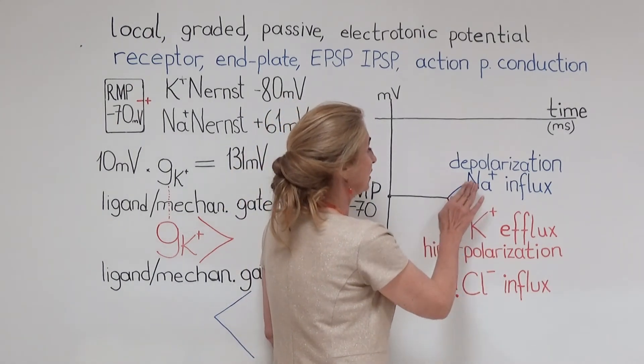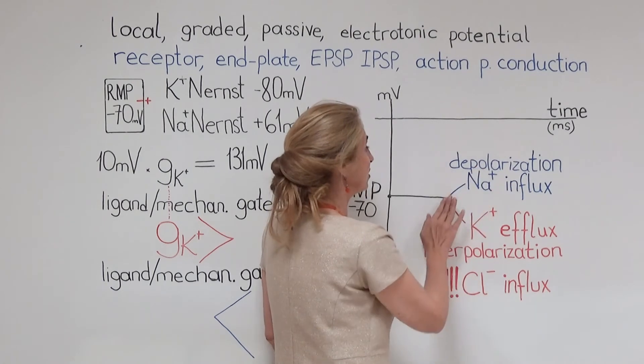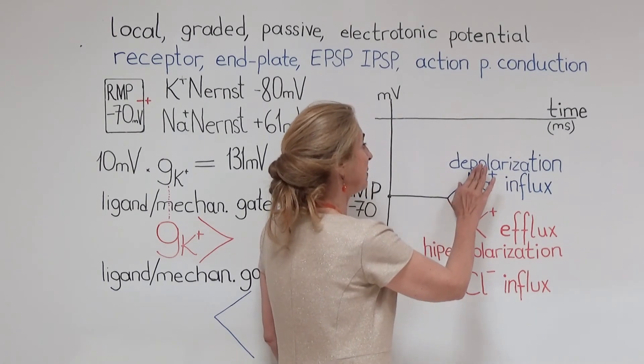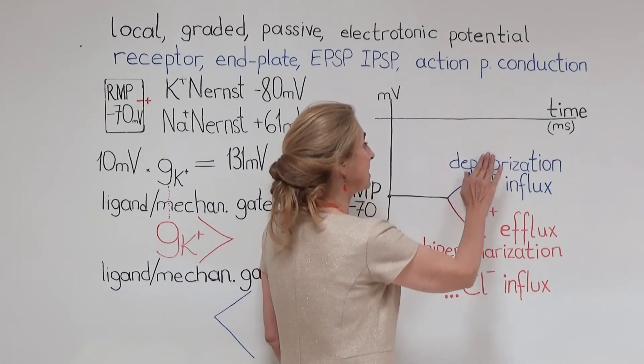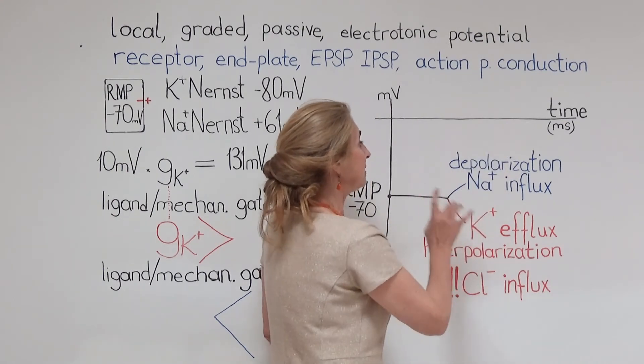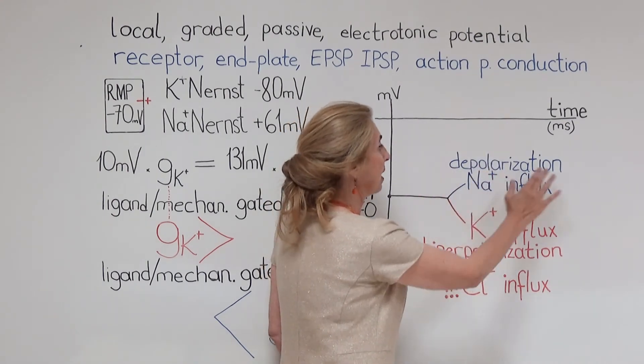What happens when we have sodium influx from the ligand or mechanically gated sodium channels? The entry of positive charges, net positive charges to the cell, is going to change the membrane potential towards less negative values. And this condition is called depolarization.